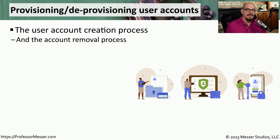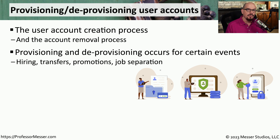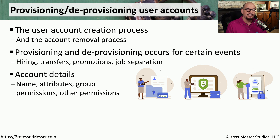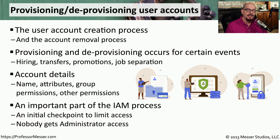This IAM process generally starts with the creation of a user account, and it generally ends when that user account is deactivated. This commonly happens during onboarding and offboarding, but it might also change if someone was promoted or moves to a different part of the company. If we were to look into the details of the information provided in IAM, we would see a name of a user, any attributes for that user, group permissions, and any other permissions for application access. This process of provisioning and deprovisioning the user account is the core of the IAM process.